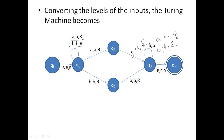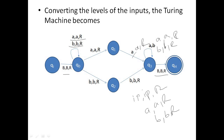So like this we can convert the given regular expression into a Turing machine. The simple summary is: first convert to finite automata, then add initial and final states with transitions B, B, R, and then convert whatever inputs you are having into the format input, input, R. If you have input A then A, A, R; if you have input B then B, B, R. Like that we can convert the given expression into a Turing machine.